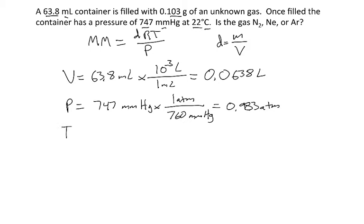And then for temperature, to go from Celsius to Kelvin, I need to add 273. Now to the correct number of significant figures, that's going to be 295 Kelvin.